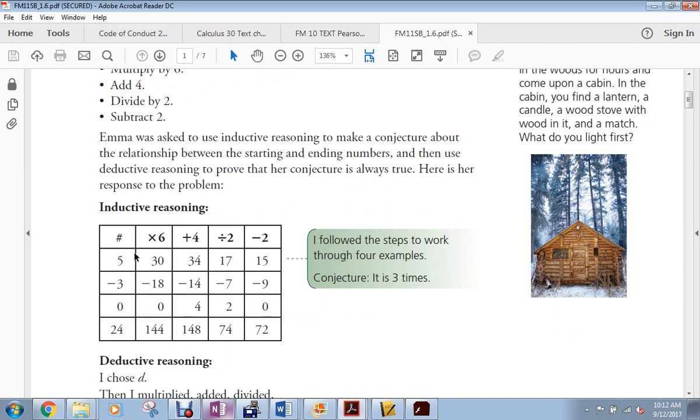Now, then she looked at the original number and the final product here, the final result. And she noticed, what? That if you multiply the original number times three, that's what you get at the end. So this is, again, inductive reasoning. Little trials, look at the results, come up with a conclusion.